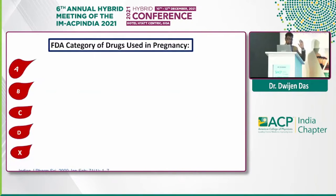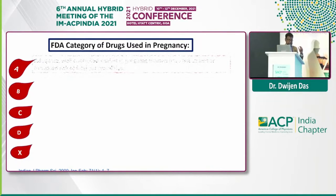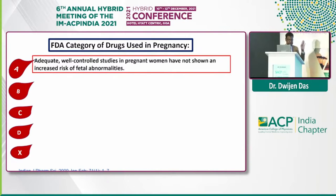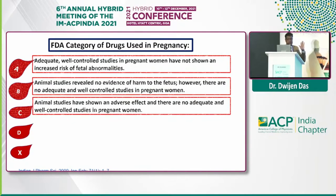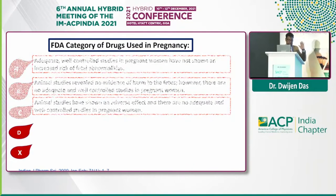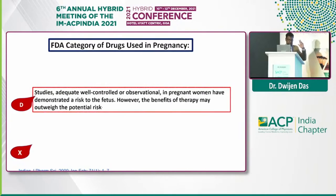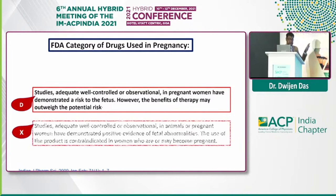FDA, way back in 1979, designed some categories of drugs: A, B, C, D, and X. Category A is well-proven that these drugs are safe in pregnancy. Category B is proved in animals — no definitive human data, but they are still taken as safe drugs. Categories C and D require a decision on whether the drug will give a beneficial effect and whether it is really important to use in that particular patient. Category X drugs should not be used — these are contraindicated.